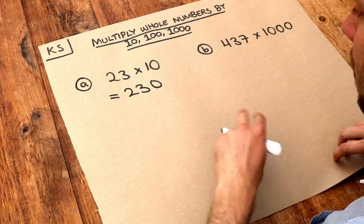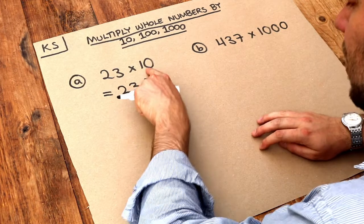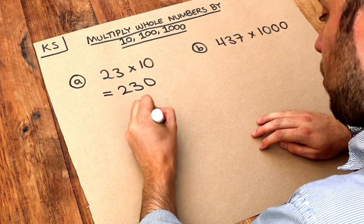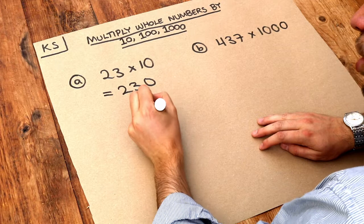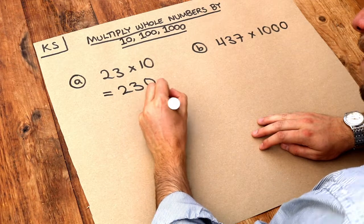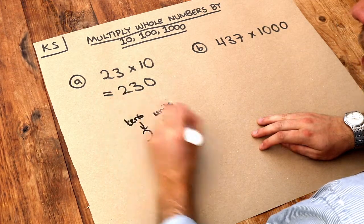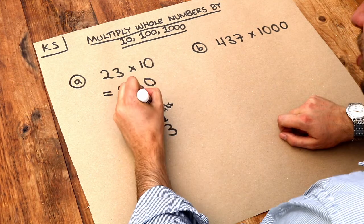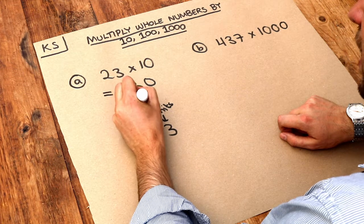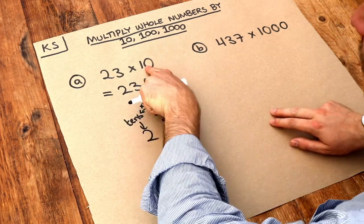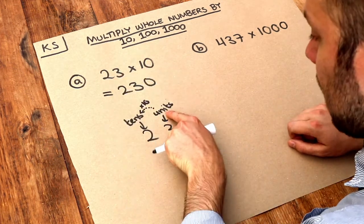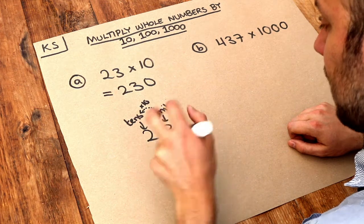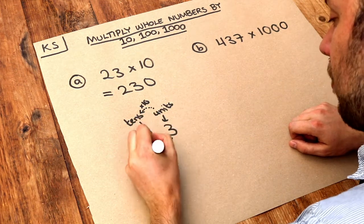And the reason that it works is that if we consider timesing by 10, at the moment the 3 is the units digit and this is the tens digit. And notice that 10 is 10 times bigger than the units digit. So that means when we times by 10, the units digit of 3 becomes the tens digit, so that 3 becomes the tens digit.